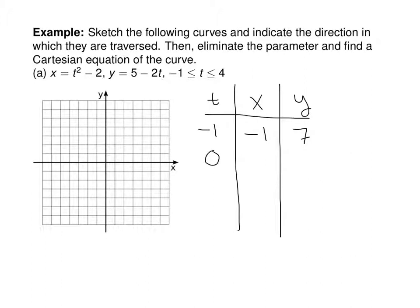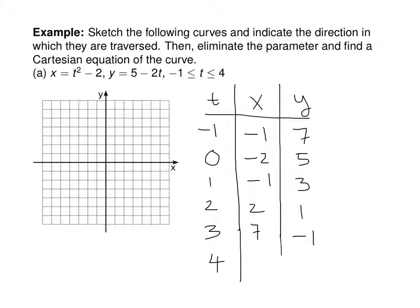When t = 0, x = −2 and y = 5. When t = 1, x = −1 and y = 3. When t = 2, x = 2 and y = 1. When t = 3, x = 7 and y = −1. When t = 4, x = 12 and y = −3.